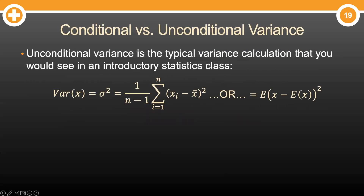You might think: I thought variance was a single number — why would it change? Well, that kind of variance or volatility — the typical kind you learn about in an introductory statistics class — is what we call unconditional variance. Basically, it is a single number that describes spread.